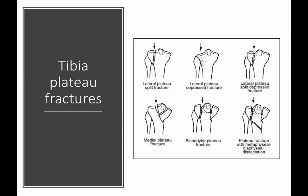What about tibia plateau fractures? This classification scheme shows the range of fracture types you might see — from a single split to a very comminuted fracture with articular involvement on medial and lateral sides, and the so-called metadiaphyseal dissociation, which is a very unstable fracture. Another important finding is the depressed fracture, which is very common. The bone is supposed to be at a certain level, but it gets crushed, depressed, or sinks — kind of like a pothole.